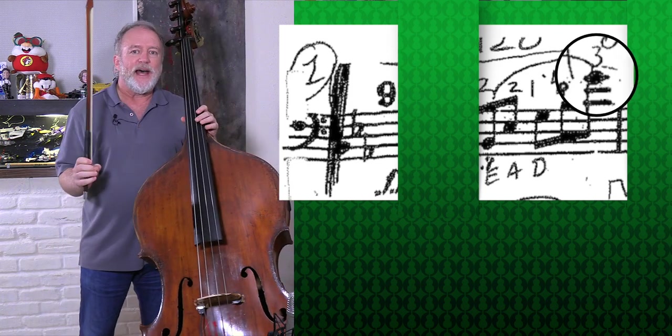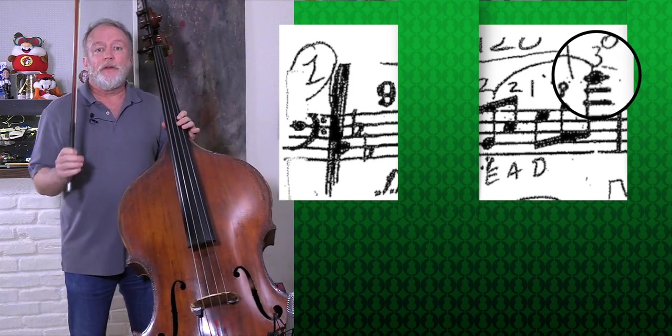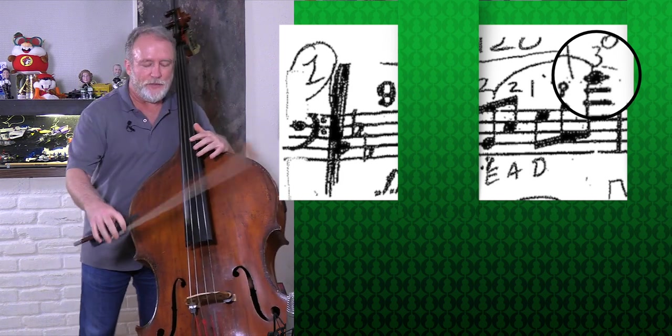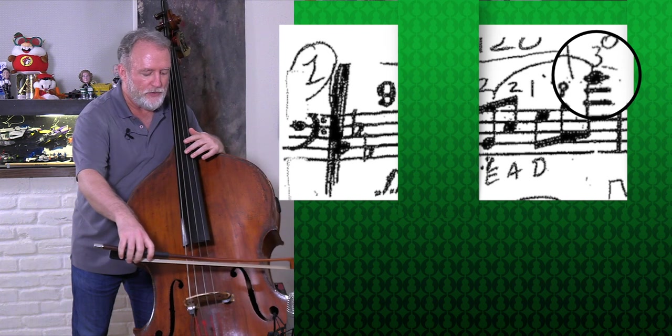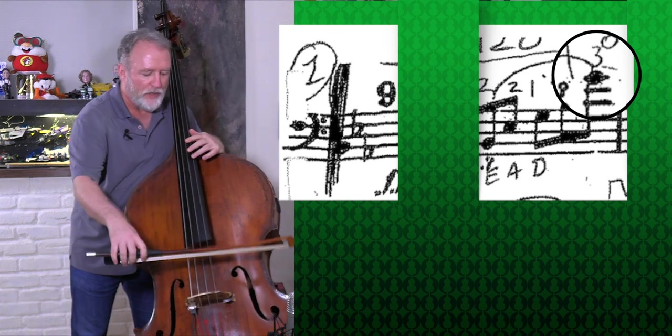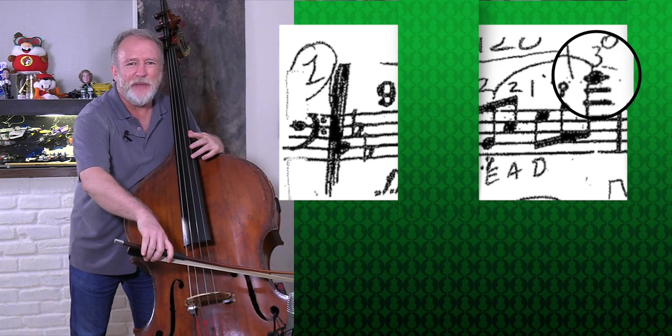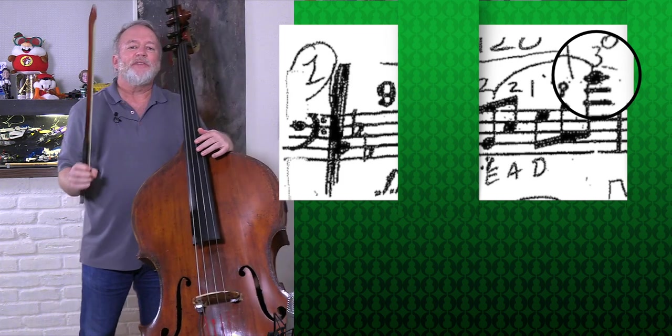Let's tonalize the high G up bow from the middle to the frog and find an ideal sounding point. I'll play it three times. So I'll aim for right about here.